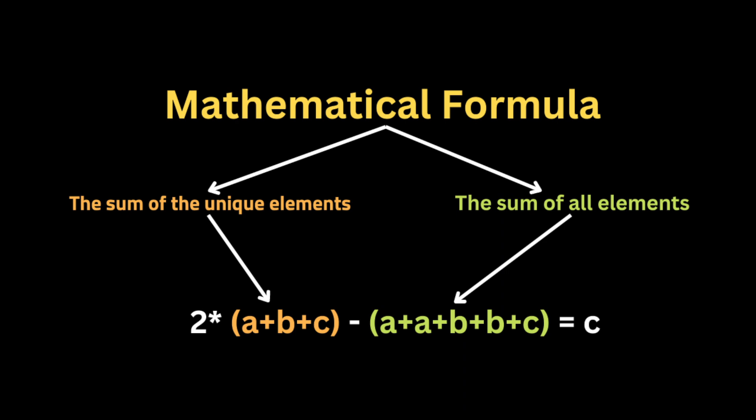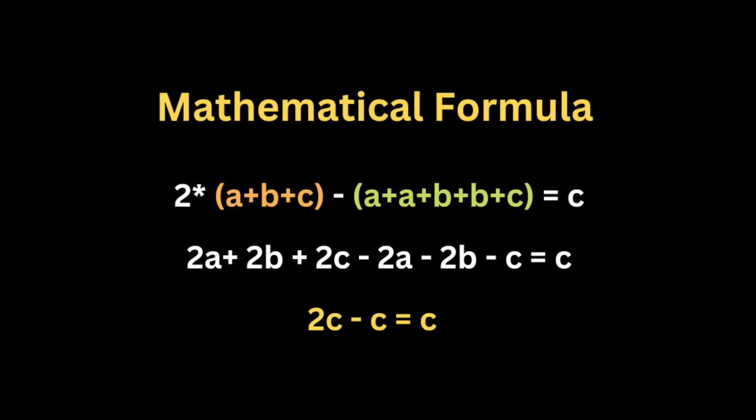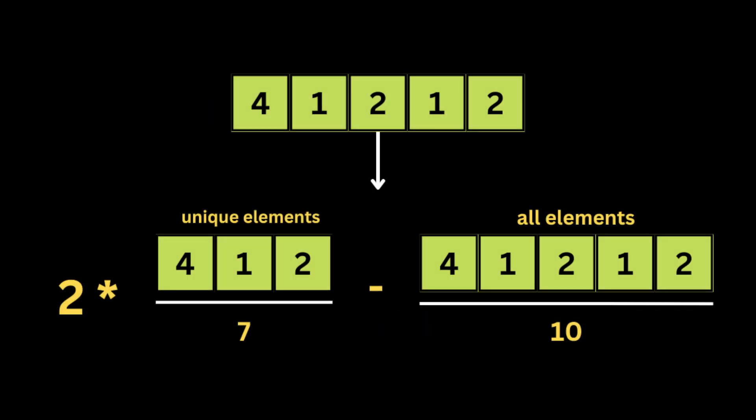First, we take the sum of the unique elements in the array, then the sum of all elements. The formula for finding the unique element is: 2 × (sum of unique elements) − (sum of all elements). For example, with elements a, b, c where c appears once: 2(a + b + c) − (a + a + b + b + c) = 2c − c = c. So the formula gives us the single unique element.